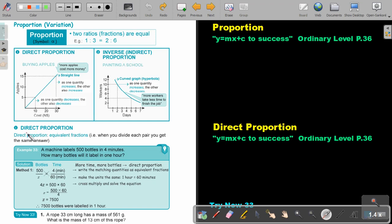Direct proportion. This is what was direct proportion. You have equivalent fractions. When you divide each pair, you get the same answer. If you divide there by two by two, you will also get one, two, three. But let's look at an example. A machine labels 500 bottles in four minutes. How many bottles will it label in one hour? So you know, the more time, the more bottles. So it's going to be direct proportion.